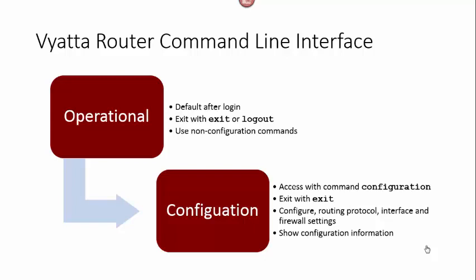Within the Vyatta router, similar to Cisco, you can truncate commands. As long as the truncated command is unique, the router will figure out what command you are entering. For example, you could enter the command configuration by spelling out the entire word, or truncate it with config. You could hit tab and it would finish completing the command to configuration, or just hit return and it would execute.